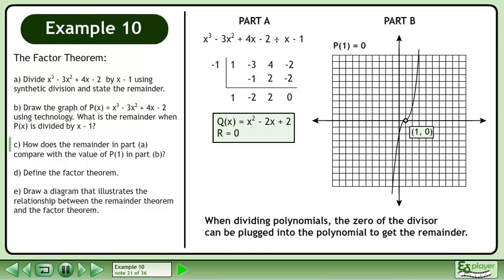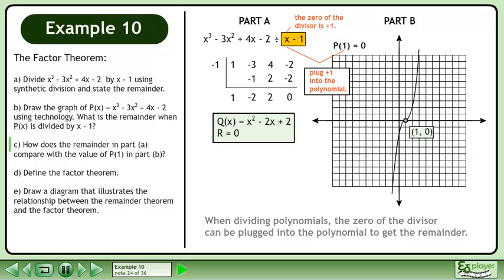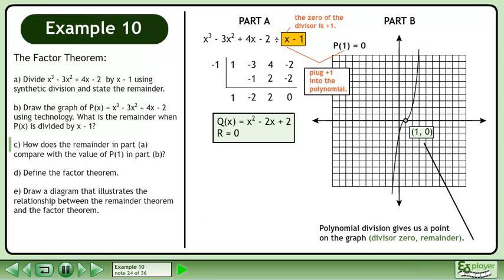When dividing polynomials, the zero of the divisor can be plugged into the polynomial to get the remainder. The zero of the divisor is positive 1. Plug positive 1 into the polynomial. Polynomial division gives us a point on the graph — the x-coordinate is the zero of the divisor and the y-coordinate is the remainder.